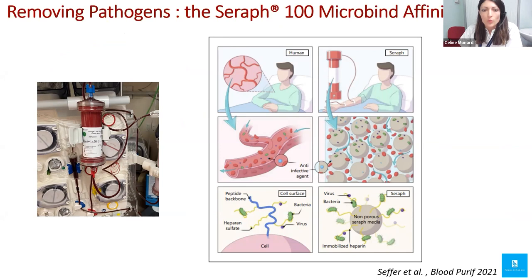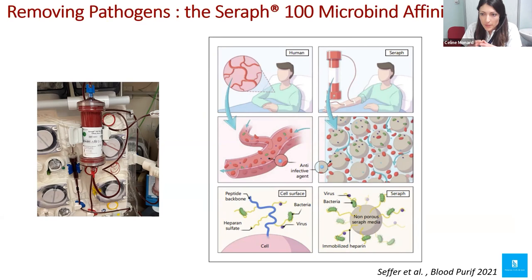The Seraph 100 is inspired by nature. Our endothelium has the glycocalyx, composed of glycosaminoglycans such as heparan sulfate. Pathogens — bacteria and viruses — have the ability to bind to glycosaminoglycans and heparan sulfate as their mechanism for cell invasion. The Seraph 100 mimics this by using heparin, which shares this binding ability. Heparin is covalently bound to beads packed inside the cartridge; as blood flows through, pathogens are absorbed and not released back into the circulation.